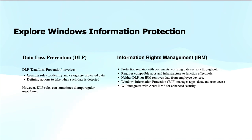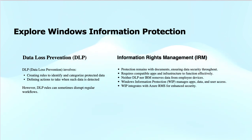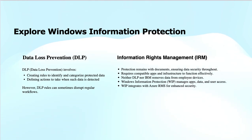Data loss prevention, also referred to as DLP, works by setting up rules to identify, categorize, and protect sensitive data. We discover the data, classify or categorize it, and then we protect it. Identifying the protected data is done through DLP rules that use patterns — for instance, credit card numbers or keywords — to find sensitive data such as financial data or any critical data to the organization.